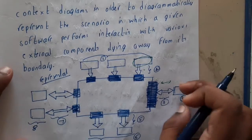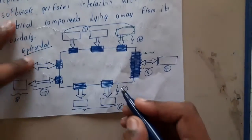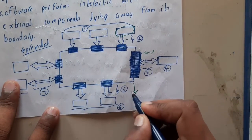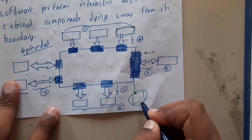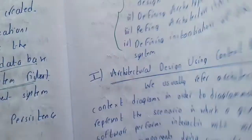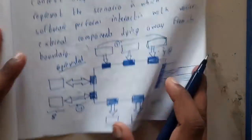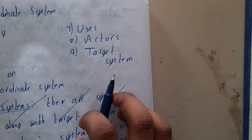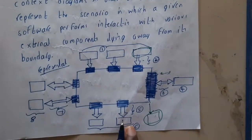The fifth one is 'depends on' — from here we are getting the output and storing it somewhere, so this depends on that, and the name of this arrow is 'depends on.' The sixth is 'subordinate system' — here it is super and here it is subordinate system. The seventh one is also 'uses' — a dual-direction arrow again. The last is the 'target system.' So these are eight components in this diagram.